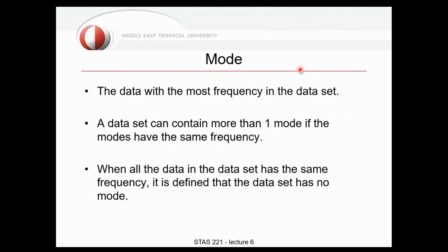What is the mode? Mode is a central criterion — it shows the most frequent value in your data set, the value that is repeated the most. This can be helpful, and later I will compare several central criteria so you can see why these things are important.